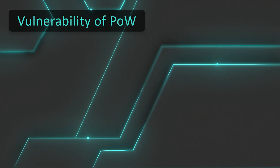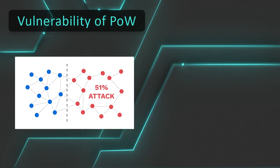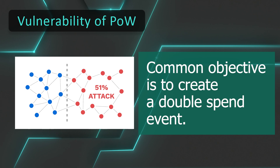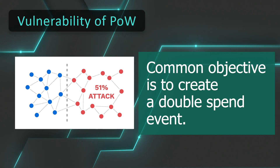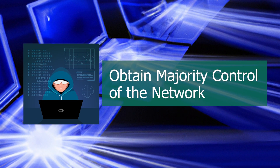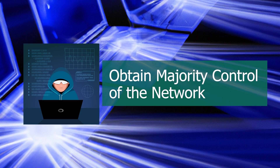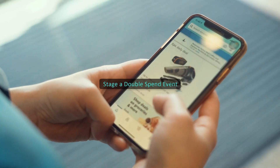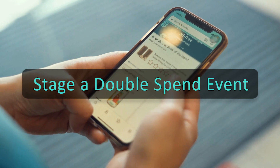Nonetheless, the proof-of-work blockchain is still vulnerable to certain types of attack. The best known is the 51% attack. The goal of a 51% attack is to perform a double spend, which means spending the same UTXO twice. To perform a 51% attack on the blockchain you need to control a majority of the hash rate, hence the name.